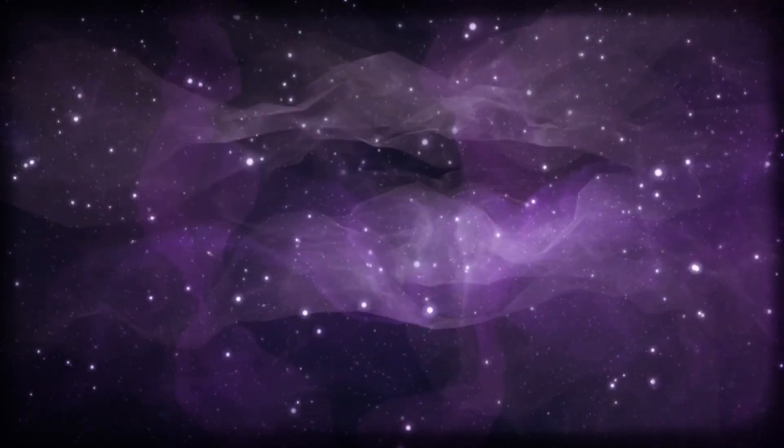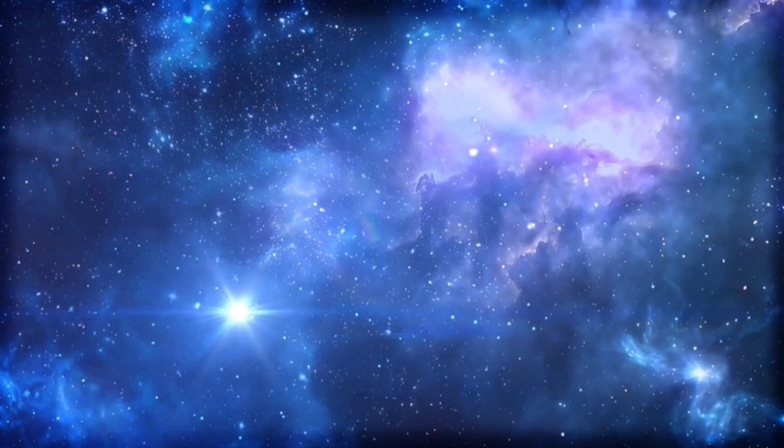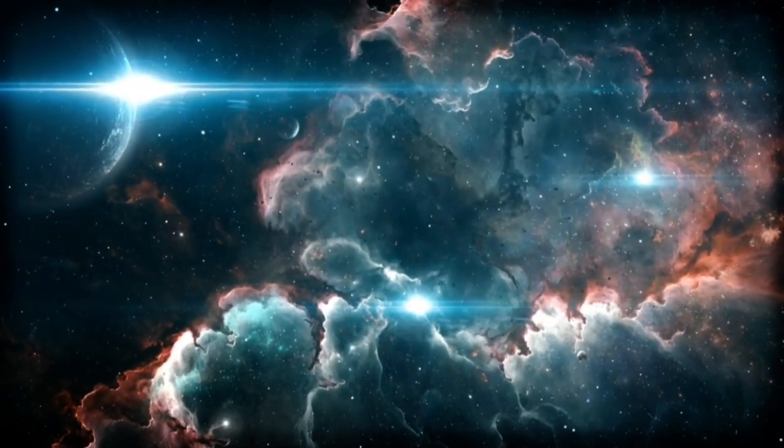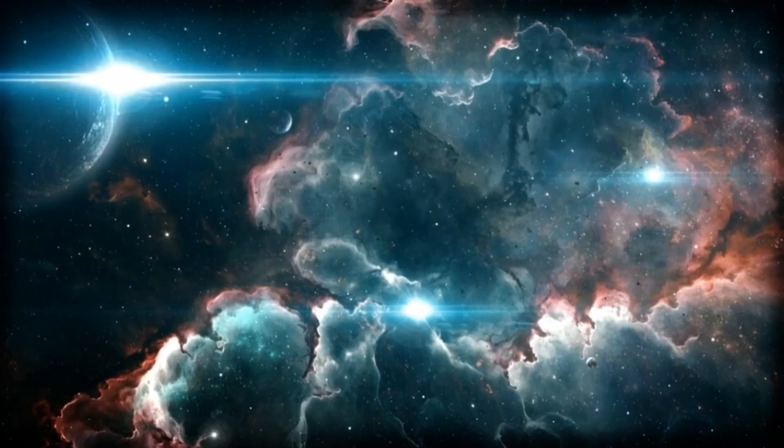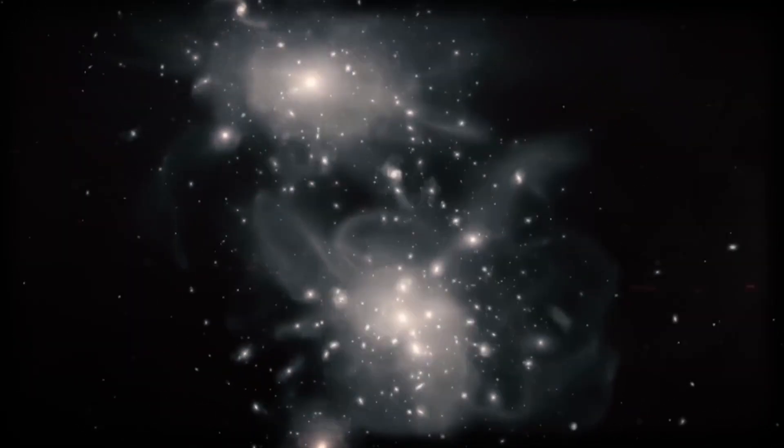You see, the standard model says galaxies should start off small and grow over billions of years, merging through cosmic webs of dark matter, slow and steady. But these early galaxies Webb found, they're already shining bright, like fully grown systems. So what gives?